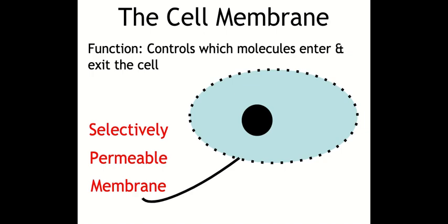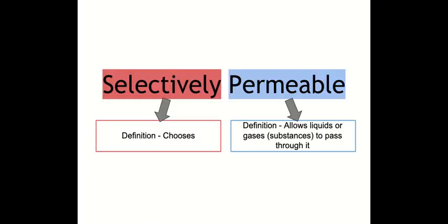A phrase you'll see a lot in relation to the cell membrane and its function — which is to control which molecules can enter and exit the cell — is the term selectively permeable membrane. Breaking this down: permeable means to allow liquids or gases to pass through, and selectively means to choose. So selectively permeable simply refers to the fact that the cell membrane chooses which molecules or substances can pass through it.